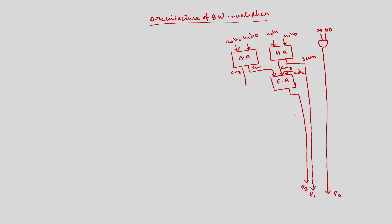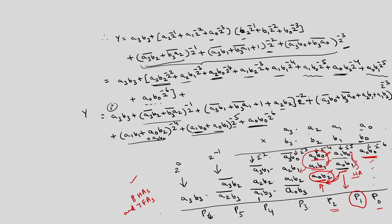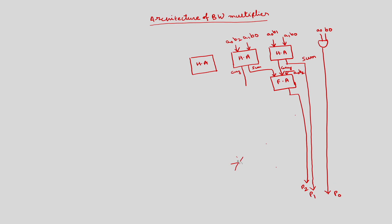So, if you proceed like that, there will be another half adder here whose inputs are A3·B0 and A2·B1. Then we require one more full adder, then another full adder. We can explain the operation in a similar manner. Another full adder, another full adder. The sum bit is applied to the full adder, and the carry bit is applied to the next stage.